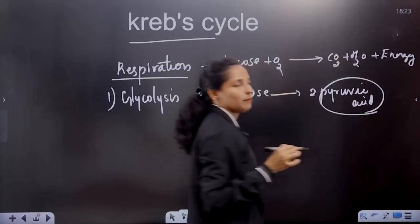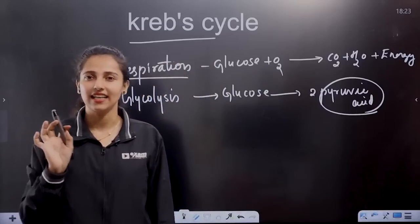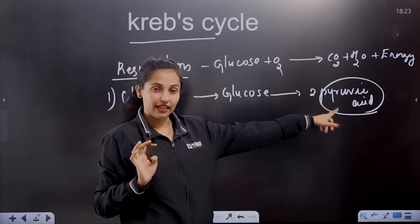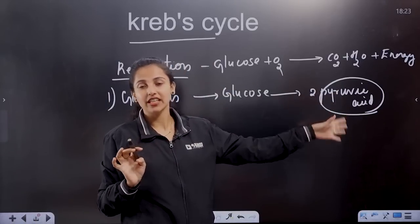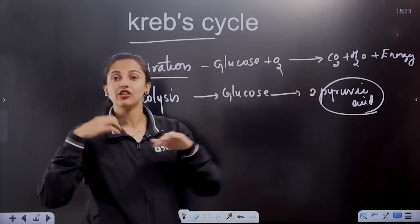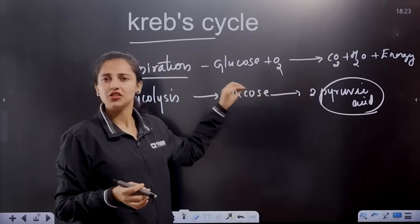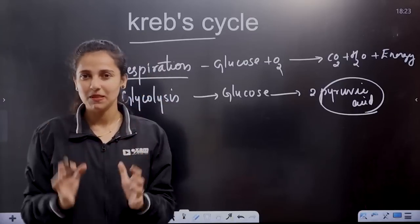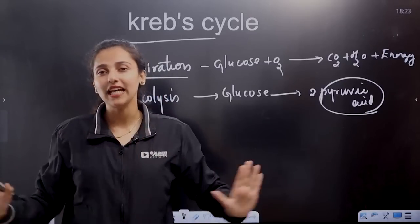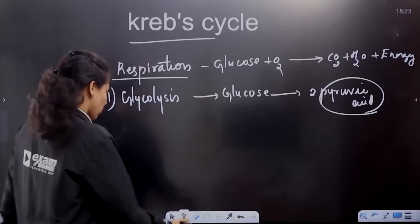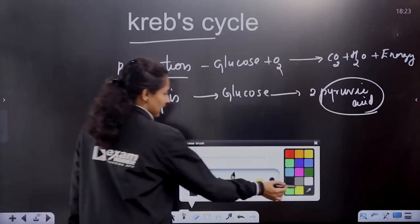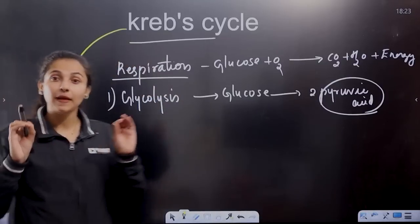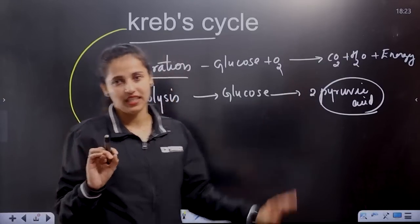We carry out respiration. Because Glycolysis is an incomplete process, we need the Krebs cycle for complete oxidation. The Krebs cycle gives us the complete oxidation of pyruvic acid.